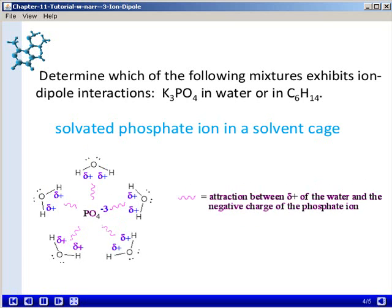And at the same time, the phosphate ions, which are the anions of the potassium phosphate, will be surrounded by a solvent cage. But notice that the water molecules are turned the other direction now.